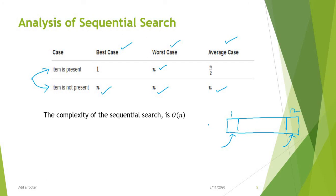So for sequential search, the maximum number of searches required is order of n — totally n searches are required whether the item is present or not. Sequential search is a very basic search. We will discuss binary search in the next video. I hope you understood sequential search and the corresponding Python code. Thank you.